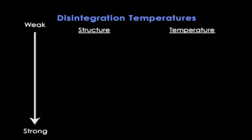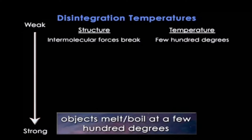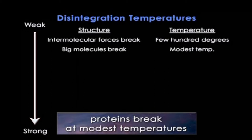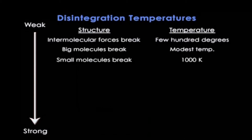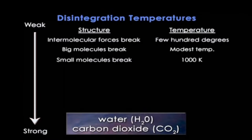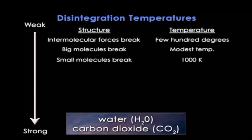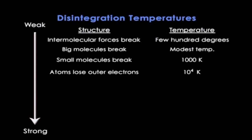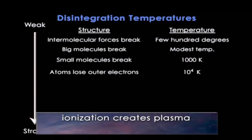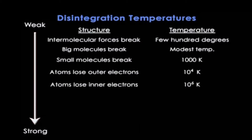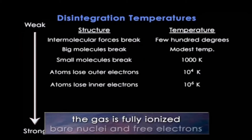This diagram shows the temperatures at which these various structures disintegrate. We're all familiar with the breaking of relatively weak intermolecular forces — objects melt and boil at a few hundred degrees. Big molecules such as proteins break at modest temperatures, on your stove when you cook food. By about 1,000 or 2,000 degrees, even small molecules like water or carbon dioxide are broken. Starting at about 10,000 degrees, the outermost weakly bound electrons are bashed off the atoms in a process called ionization, creating a plasma of positively charged ions and freely roaming electrons.